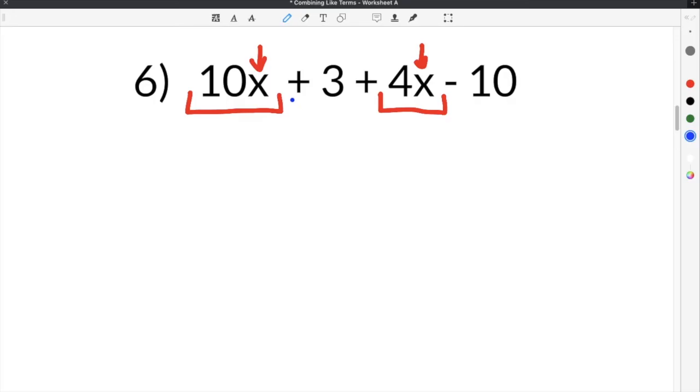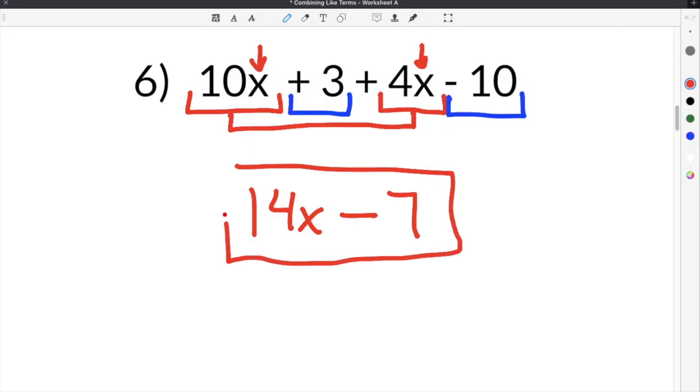And 3, which is a constant or a number, can be combined with negative 10 because it is also a constant and a number. When we combine these, the first thing we are going to combine is 10x plus 4x, which is 14x. And then positive 3 minus 10, that gives us negative 7. So our final answer for this one is 14x minus 7.